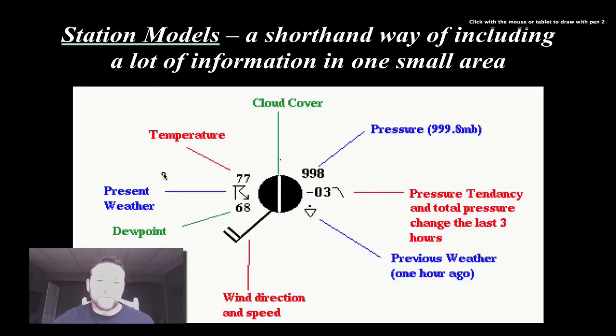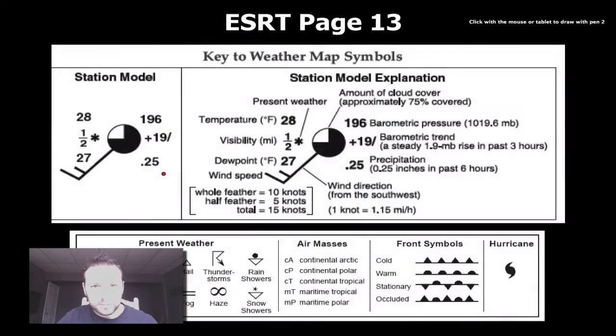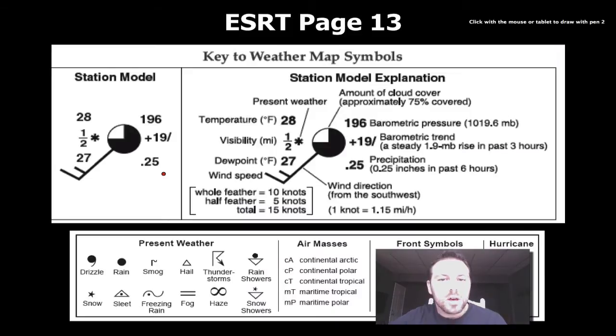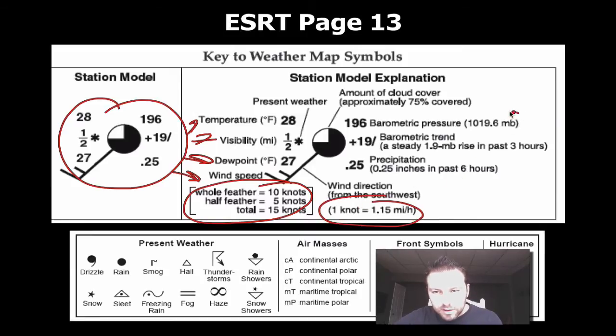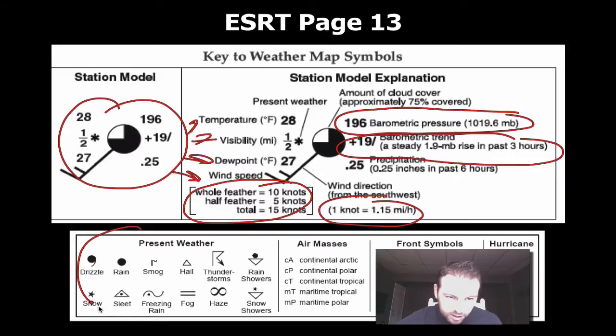Now, granted, it can get pretty confusing, like we saw in the previous diagram. But it's still the best way we have of putting all this information in one spot. Now, if we open up to page 13 of the reference table, we can see that they actually give us the station model right here. And then what all the pieces mean on our station model. And even some little tips and clues on what certain things mean, conversion factors, how to convert certain things over, and what's going on. So there's a huge amount of information. Oh, and then not to forget our present weather down here on the bottom. So there's a huge amount of information on here. And we're going to go through and try to decipher this code.